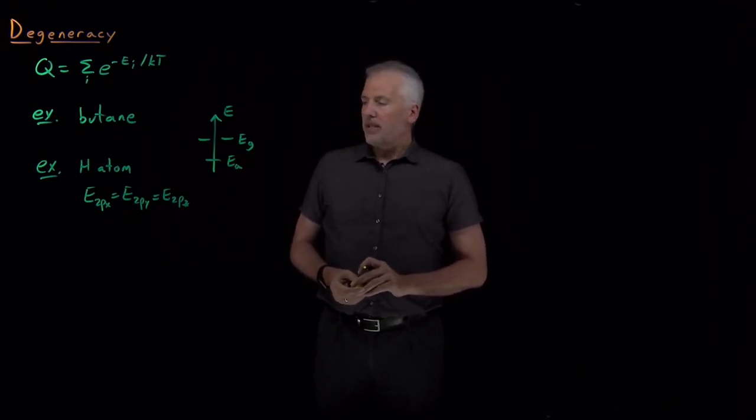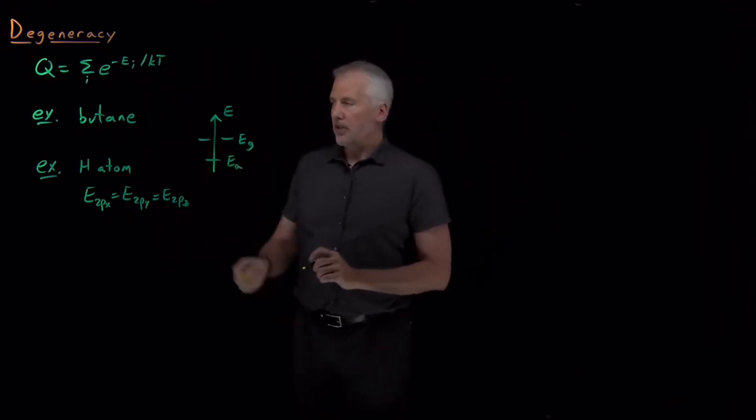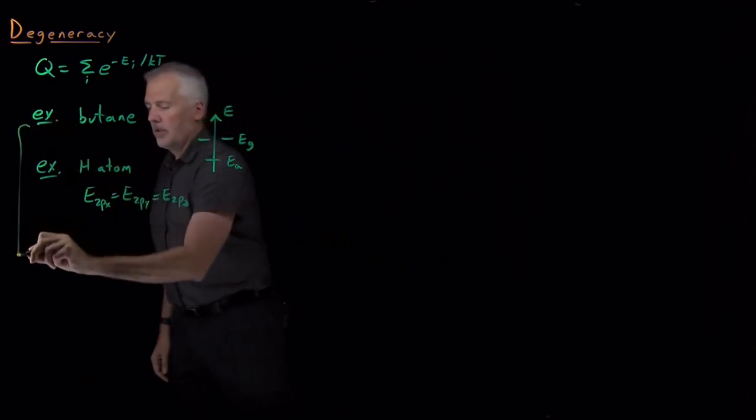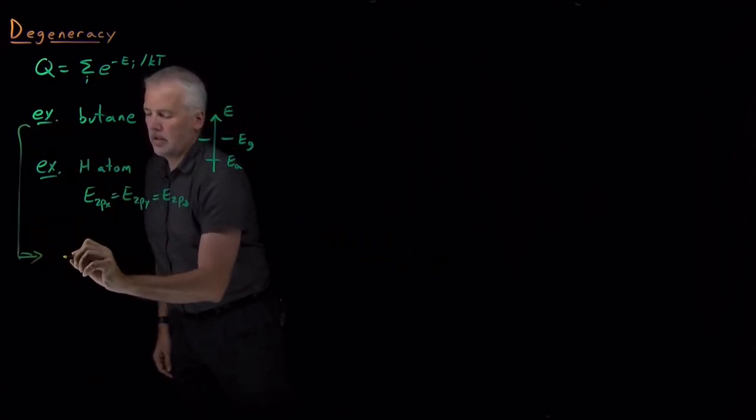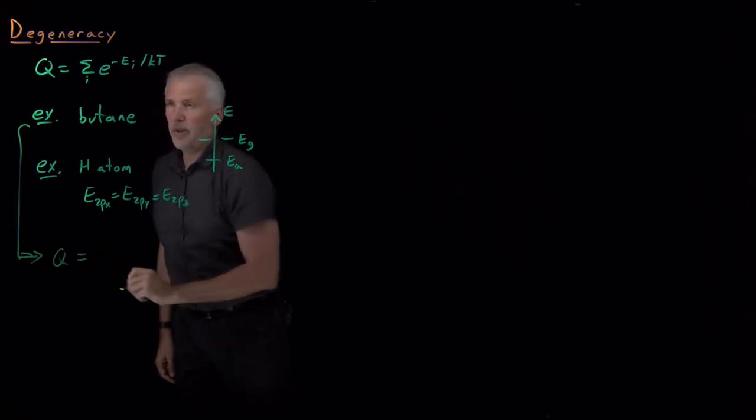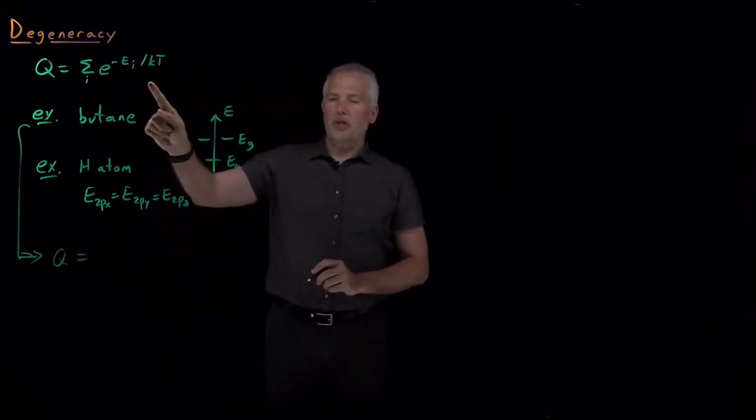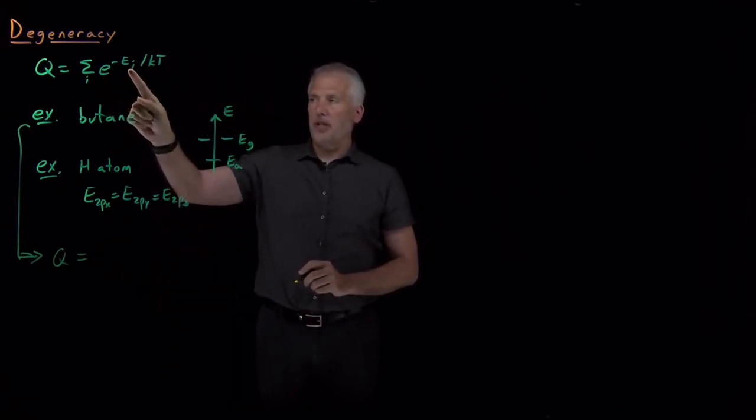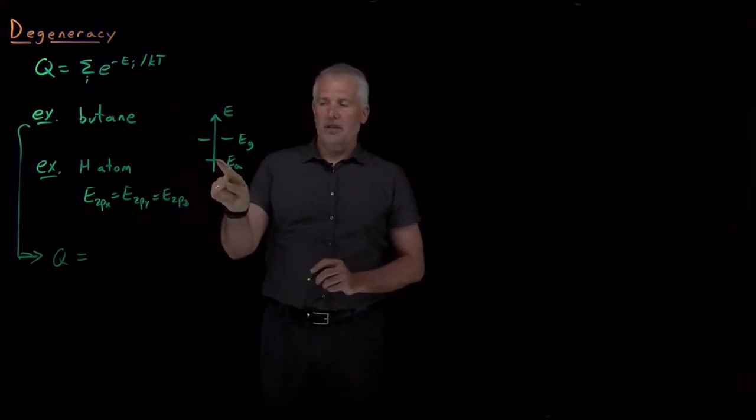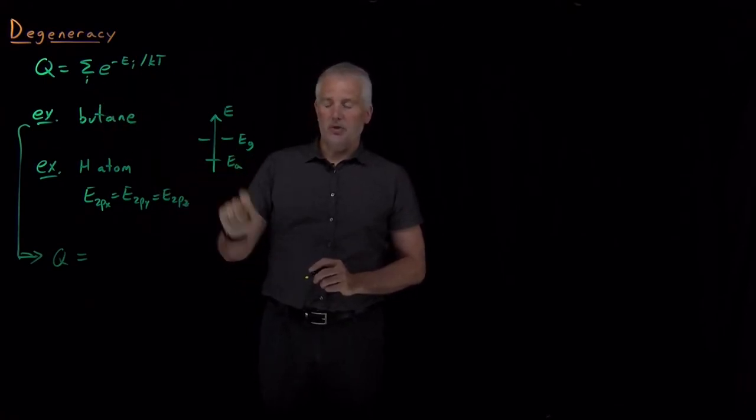So what this means is when we go to write out the partition function—let's take the butane example—we have two ways to do it. If I take this expression literally, the sum of e to the minus energy over kT for all the different states, the states are anti and Gauche plus and Gauche minus.